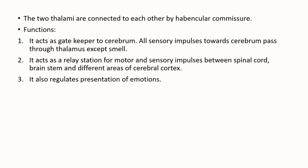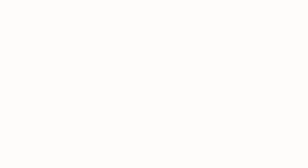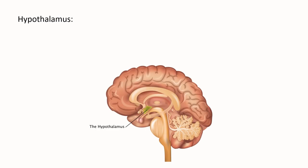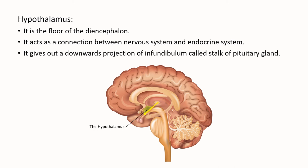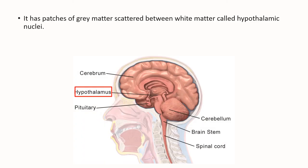Thalamus also regulates the presentation of emotions. The last part of diencephalon is the hypothalamus. It is the floor of the diencephalon and acts as a connection between the nervous system and the endocrine system. It gives out a downward projection of infundibulum, called the stalk of pituitary gland. Just like the cerebrum, hypothalamus also has patches of gray matter scattered between white matter, called the hypothalamic nuclei.